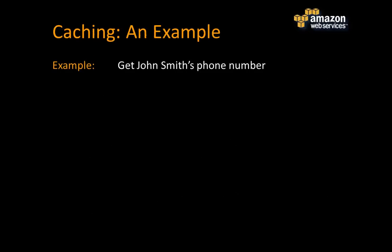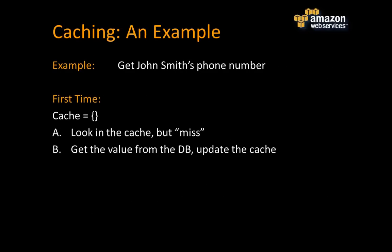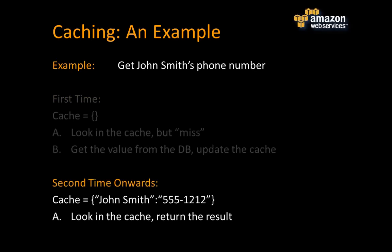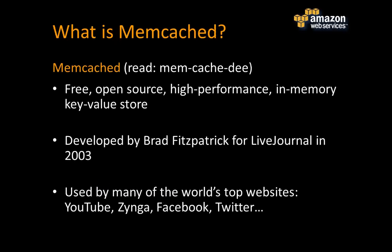A simple example of caching: say we're trying to look up the phone number of a person, something that doesn't change all that often. The first time we do it, our cache is empty. We look in the cache, it's not there — that's called a cache miss. We go to the database, get the value, and update the cache. The user gets the value back, and the cache now contains the key, which is John Smith, and the value, which is the phone number. The second time we need that data, we look it up in the cache, see it right away, and avoid the database round trip.